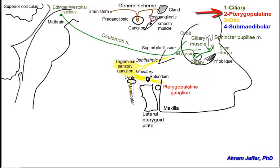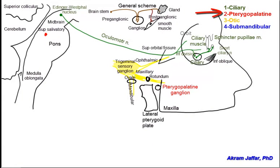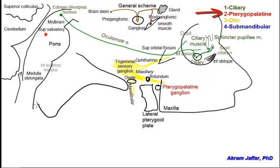The preganglionic fibers of the pterygopalatine ganglion have their cell bodies in the superior salivatory nucleus, located in the pons. The preganglionic fibers from the superior salivatory nucleus are carried by the nervus intermedius, which travels via the facial nerve. The facial nerve passes through the internal auditory meatus within the petrous part of the temporal bone, approaches the tympanic cavity, and bends abruptly backwards forming the genu.